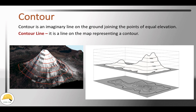Contour lines are interpolated. If you look at the surface, the point is below and above the reference point. That is called elevation.